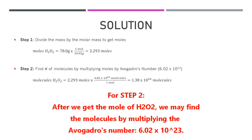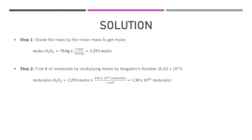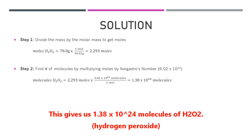For step two, after we get the moles of hydrogen peroxide H₂O₂, we find the molecules by multiplying by Avogadro's number, 6.02 times 10 to the power of 23. This gives us 1.38 times 10 to the power of 24 molecules of H₂O₂, hydrogen peroxide.